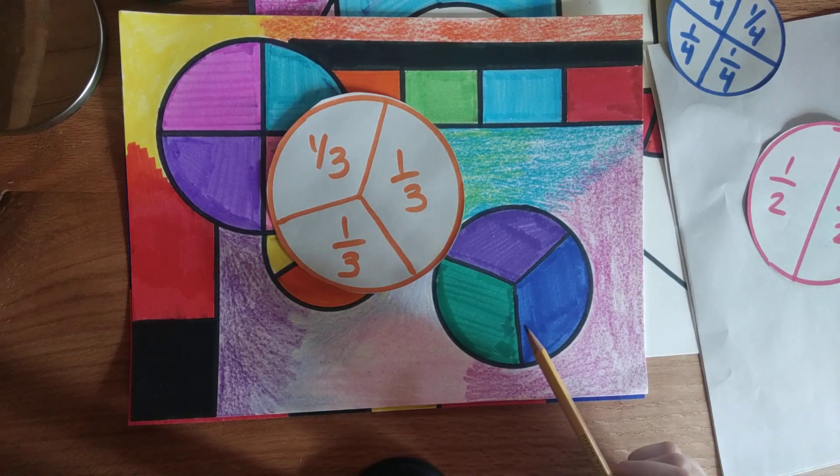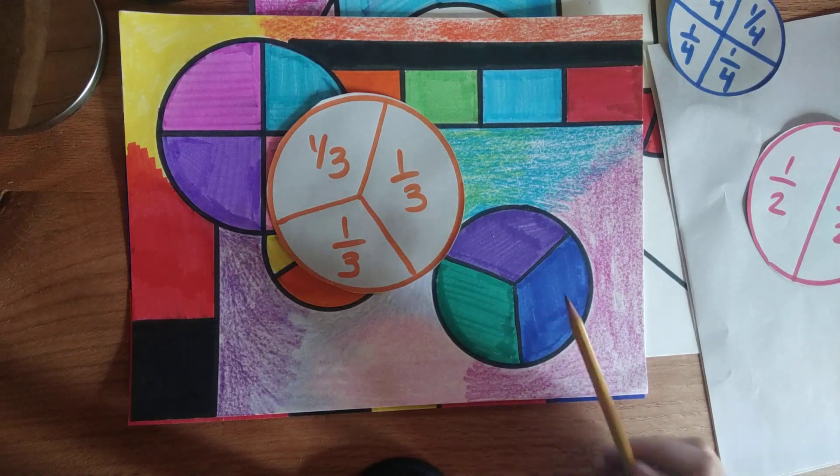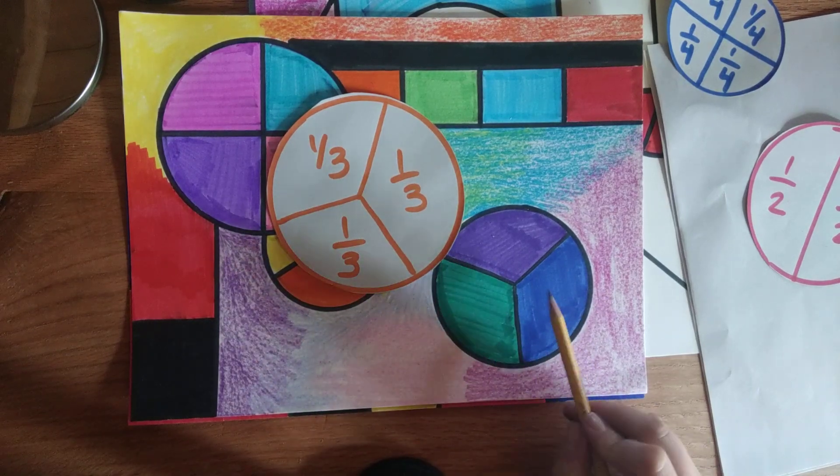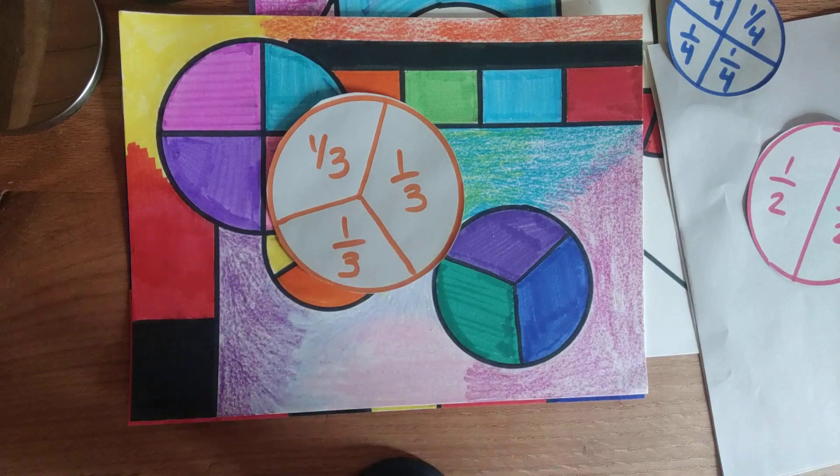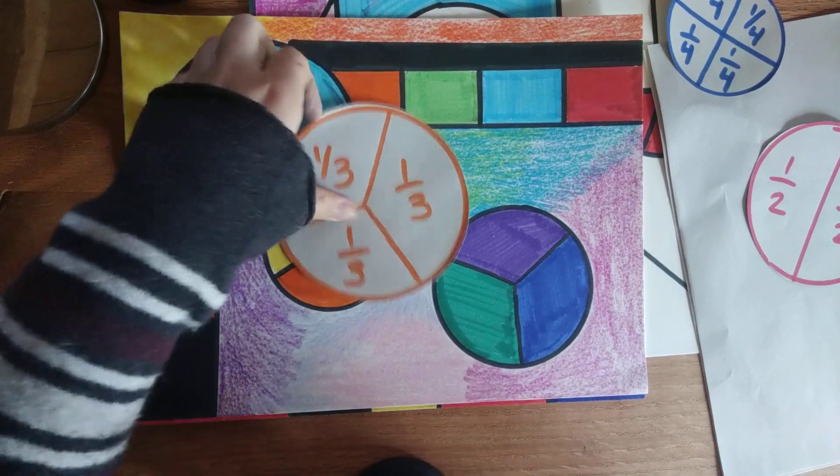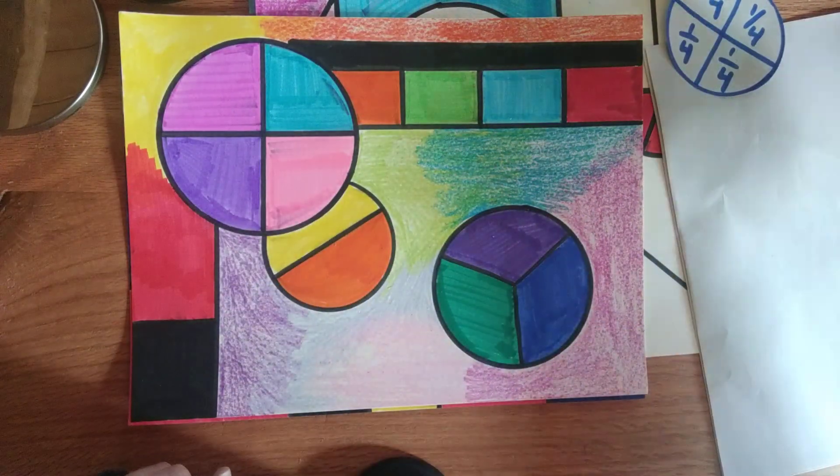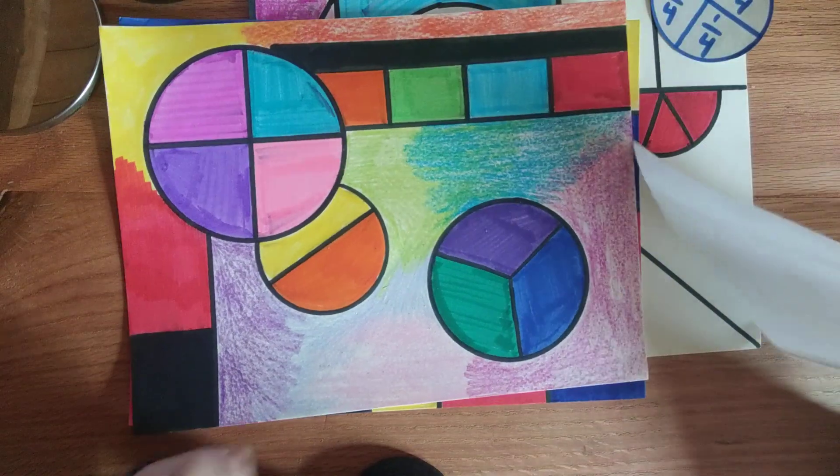I hope you said the cold colors because those are the cold or the cool colors. Green, blue, purple. The end of the rainbow are the cold colors. Let me show you how to draw that circle broken up into thirds.